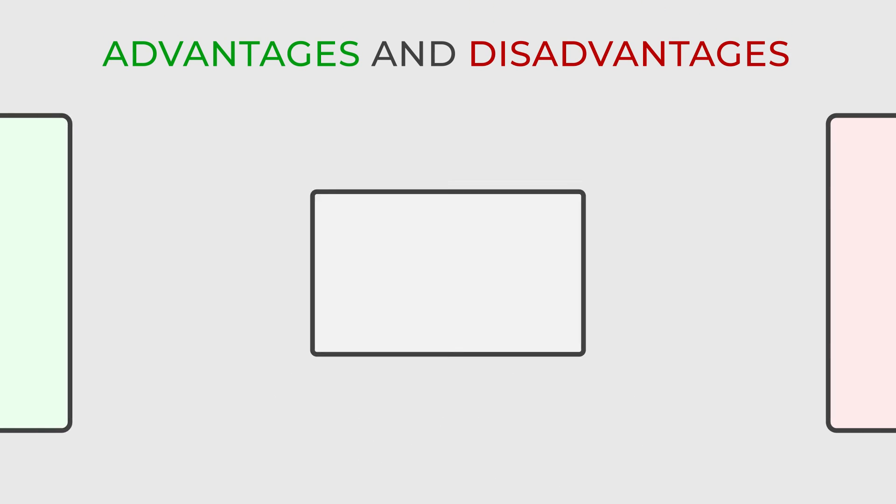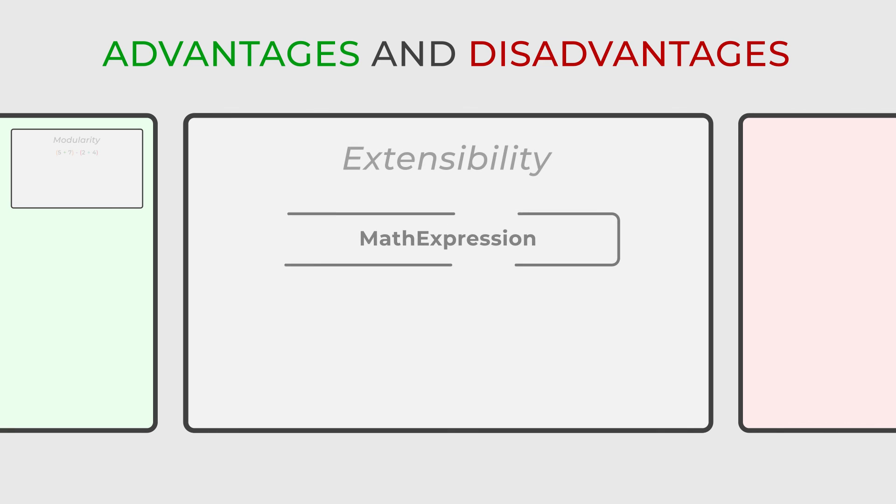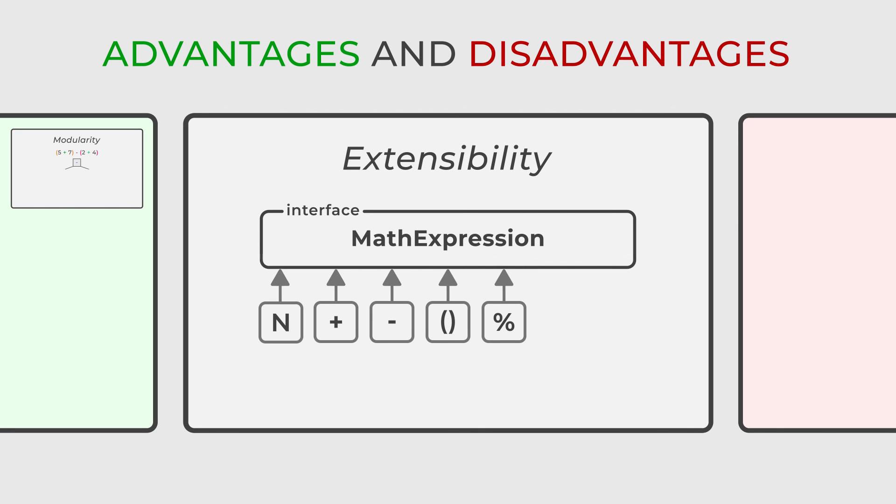One of the main benefits of this design pattern is its modularity. It breaks down complex grammars into modular expressions, resulting in a more organized and maintainable codebase. This modularity also contributes to the system's extensibility, making it easier to change existing grammar or add new language constructs by adding or modifying expression classes.